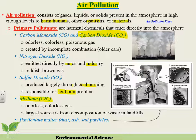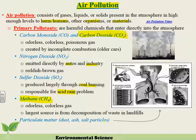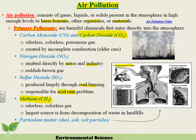Methane is extremely efficient at trapping heat — about 20 times more than carbon dioxide. We'll talk about where human methane creation comes from, because it would also be created regardless of human activity. Then there's particulate matter: dust, ash, salt particles, pollen — stuff that would naturally be in the atmosphere — but we'll also discuss particulate matter from coal mines, factories, and automobiles. Primary pollutants are harmful chemicals entered directly into the atmosphere with no chemical reaction occurring.